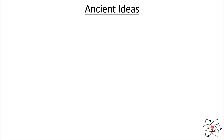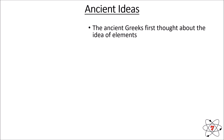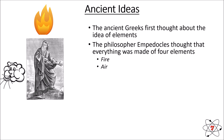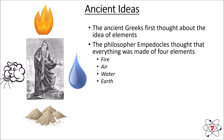Before we look at any modern ideas we might have about elements, compounds and mixtures, I want to have a quick look at some of the ancient ideas that we used to have. The ancient Greeks first thought about the idea of elements — before them, no one had really thought about what makes things up. The philosopher Empedocles thought that everything was made of four elements: fire, air, water and earth.